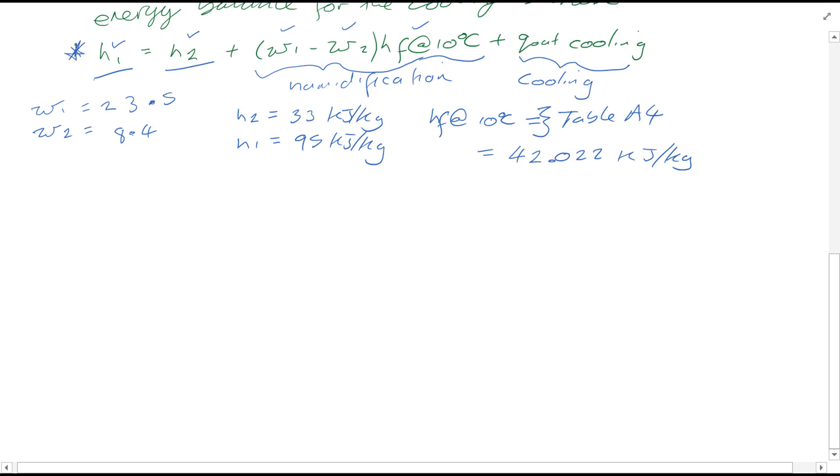Hence we just need to rearrange this equation here. And what you'll find is you'll find the answer q_out through cooling, q_in, to be equal to 61.36 kilojoules per kg of dry air.